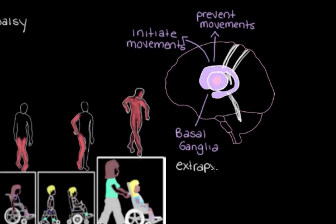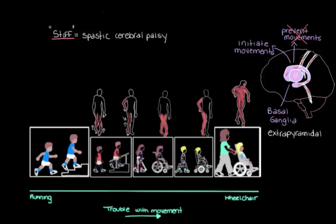These tracks are called extrapyramidal because they do not go through the medullary pyramids on their way to the spinal cord. When the basal ganglia or these extrapyramidal tracks are damaged, underdeveloped, or impaired in someone with cerebral palsy, the basal ganglia can't do their job of helping us prevent unwanted muscle movements.